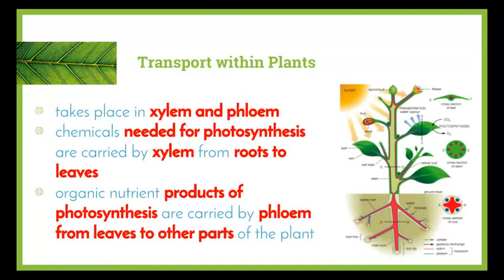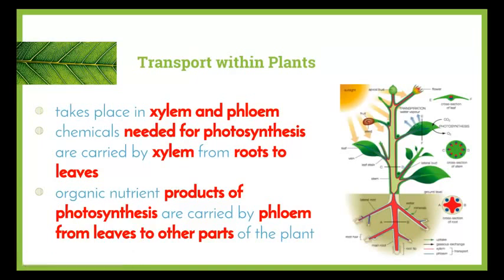So far we've been looking at transport within animals, in particular looking at the different vessels that are involved — our veins, arteries and capillaries — and the substances that are transported in the blood. Now we need to move on and have a look at the same kind of thing but with plants. Transport within plants takes place in two vessels known as xylem and phloem, which we touched on in year 11, and now we're going to look at what actually happens in each of these vessels in order for substances to move either up or down the plant.